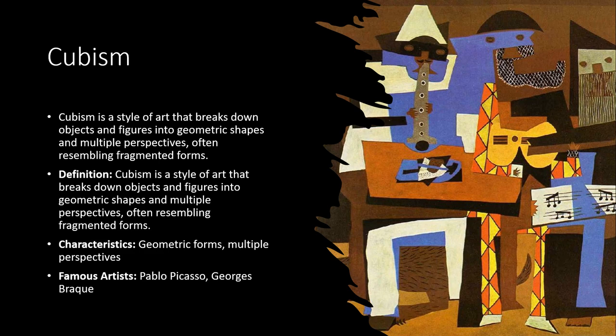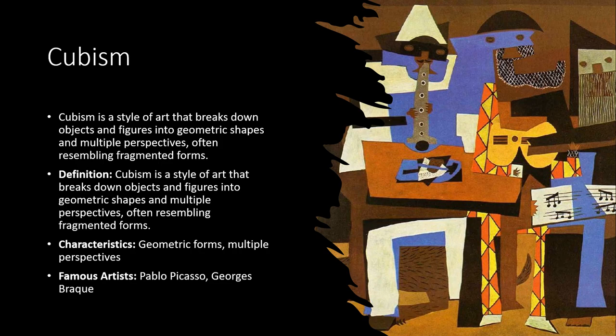With Picasso, it is abstract but we think of him as an abstract artist — well, it's abstract in that it doesn't fully represent the form of the person, but it's less abstract than it is cubism.